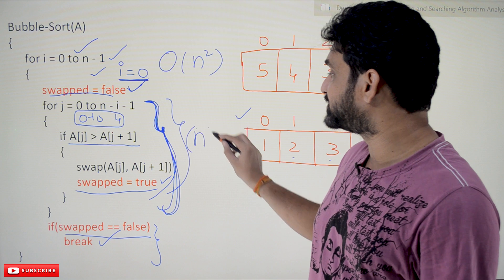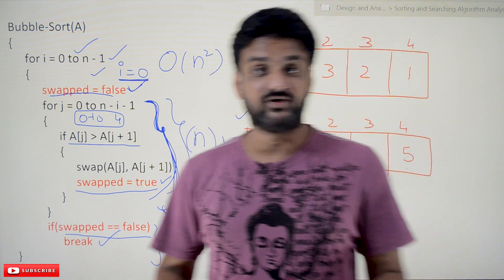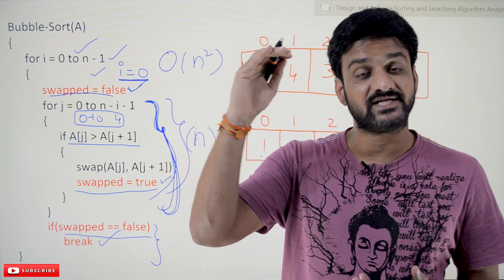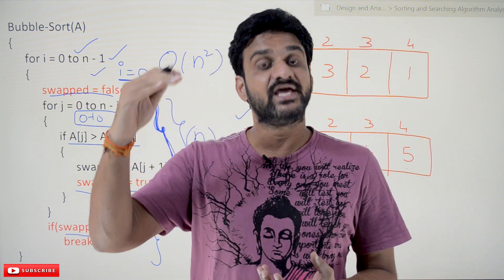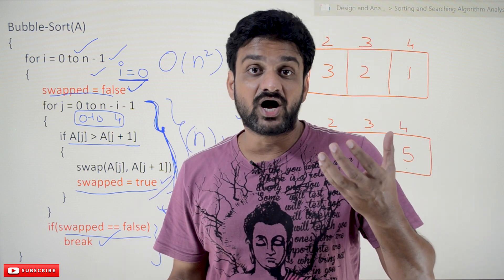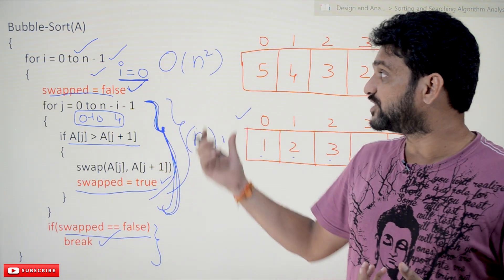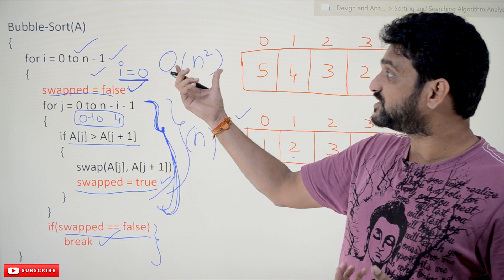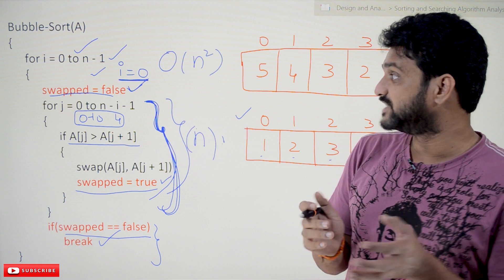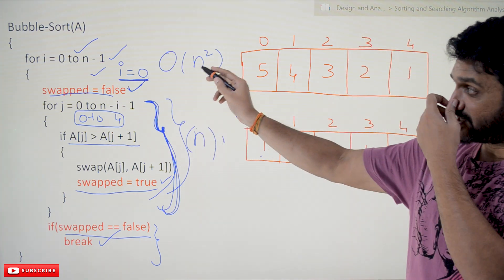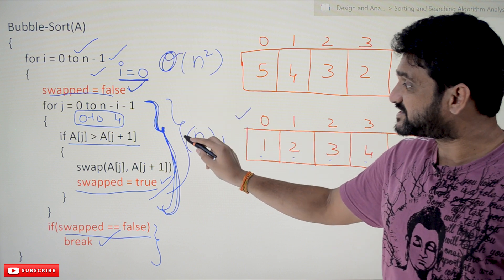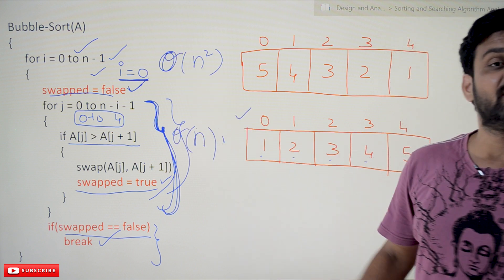In summary: the original bubble sort always takes Θ(n²) comparisons — best case, worst case, and average case. The optimized bubble sort takes O(n²) in the worst case, Θ(n²) in the average case, and Θ(n) in the best case. That is the key difference between the two algorithms.